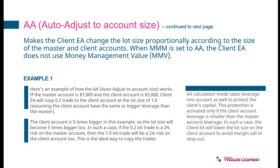In this case, the 0.2 lot trade represents a 2% risk on the master account. So on the client account, to risk the same 2%, we need to open the same trade but with a full lot size — which is five times the master trade size. This is the ideal way to copy trades and preserve the same risk in percentage with automatic lot scaling.